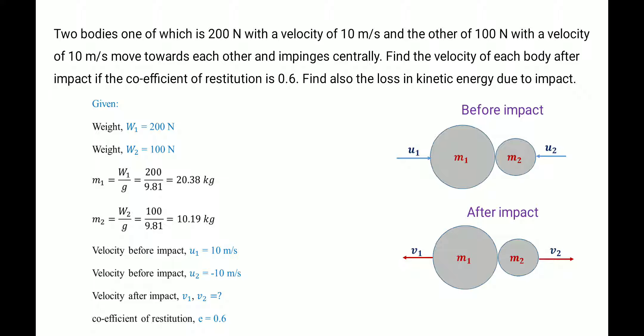Let us understand these principles with the help of an example problem. Two bodies: one of 200 N moving with a velocity of 10 m/s, and another of 100 N moving with a velocity of 10 m/s — they move towards each other and impinge centrally (impinges means impact). After impact, M1 and M2 move in opposite directions. We need to find the velocity of each body after impact. The coefficient of restitution is given as 0.6.